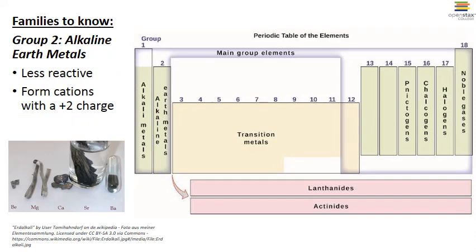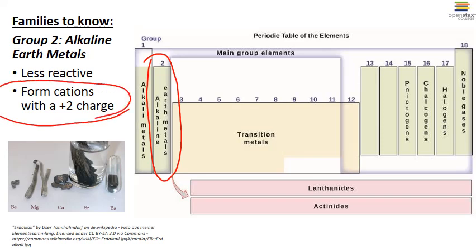Column 2 on the periodic table is also known as the alkaline earth metal family. So these metals are less reactive than the alkali metals. They do still react with air and water, but much more slowly. Most importantly, though, when they react, they all form cations with a plus 2 charge.